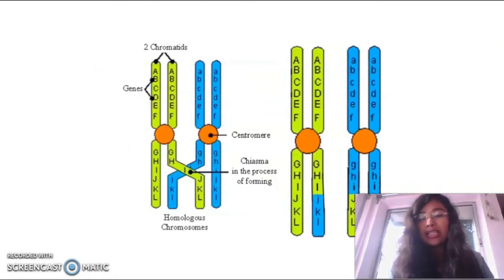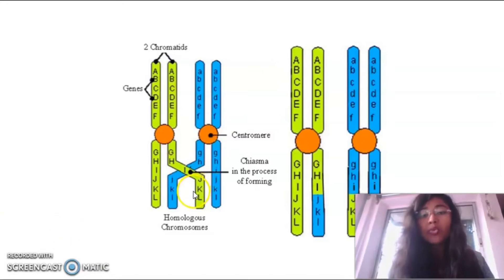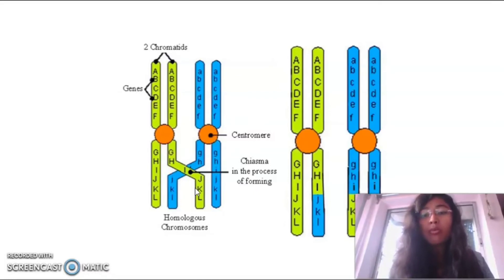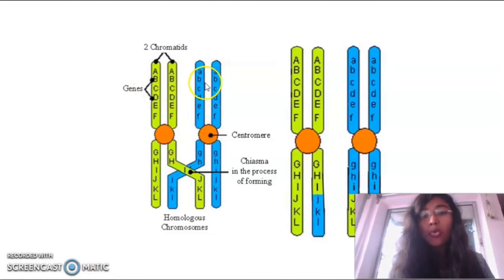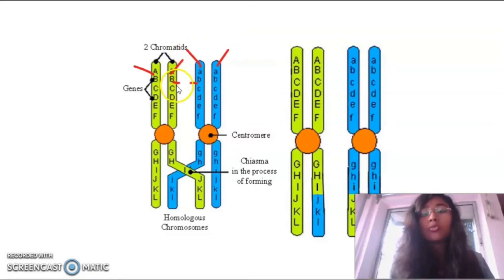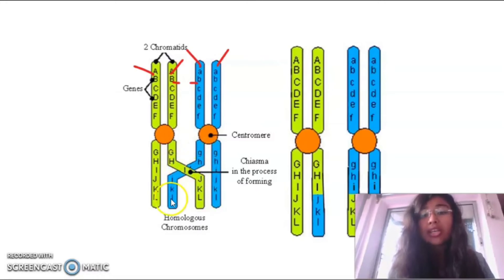Crossing over is the exchange of genetic material between the non-sister chromatids of homologous chromosomes. We have 23 pairs of chromosomes — for each pair, one comes from your mother and one from your father. The two strands of the same chromosome are sister chromatids, while the strands from the two homologous chromosomes are non-sister chromatids. Crossing over occurs between non-sister chromatids by forming a chiasma.